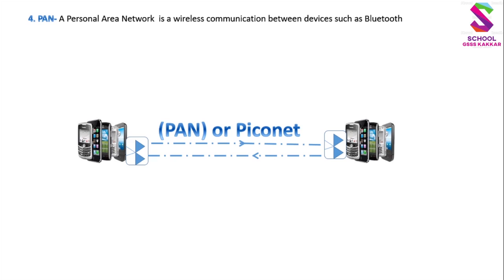PAN — PAN stands for Personal Area Network. A Personal Area Network is a wireless communication with devices such as Bluetooth. Personal Area Network एक बिना तारों का संचार है उपकरणों के बीच में — जैसे mobile phone के बीच में Bluetooth के जरिए data share करते हैं। यह हम personally आपस में करते हैं। जैसे mobile phones को आपस में Bluetooth या Wi-Fi sharing के जरिए connect करते हैं — यह Personal Area Network है।